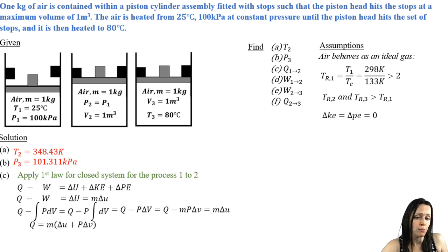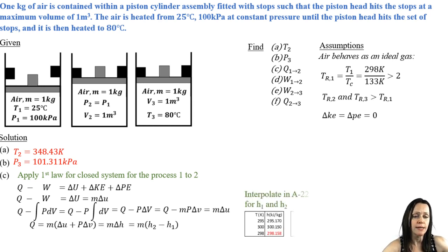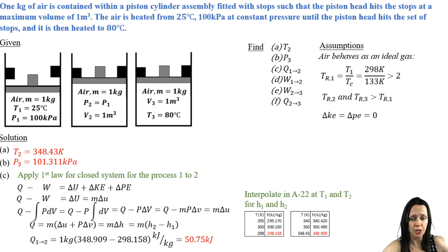Now what I'm going to do is I'm going to put the delta U and the P delta V together, because that's the definition of enthalpy. And that's really convenient, because all I have to do is look in those ideal air tables and pull out those H1 and those H2 values. It does require a little bit of interpolation, but not too bad. And then it's just a plug and chug. And I've got my Q from one to two.